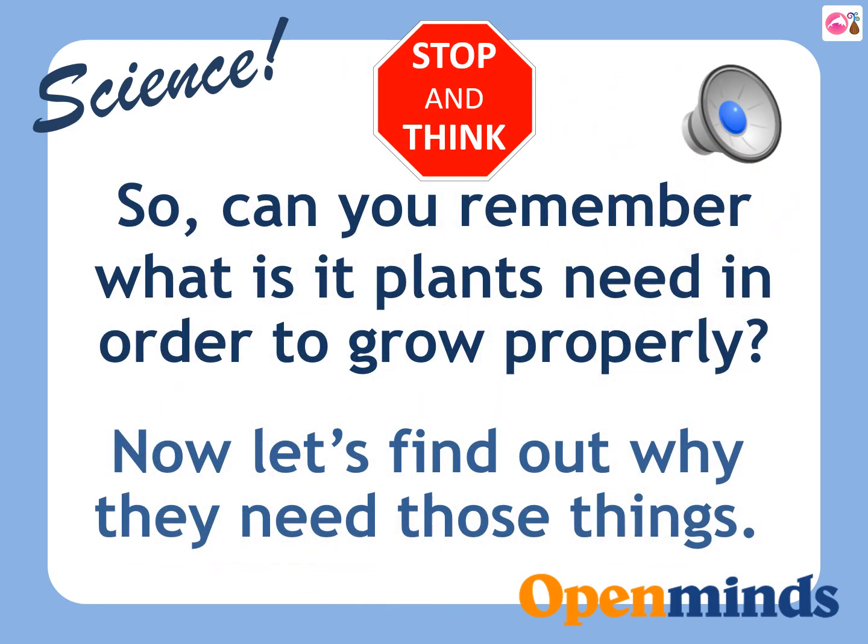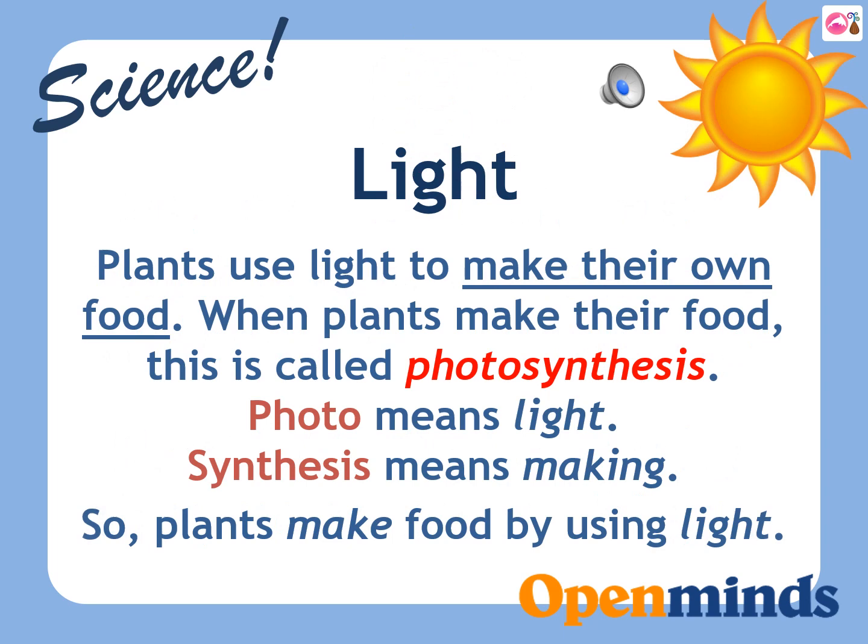Stop and think. Can you remember what plants need in order to grow properly? Now let's find out why they need those things. Light: plants use light to make their own food. When plants make their food, this is called photosynthesis.